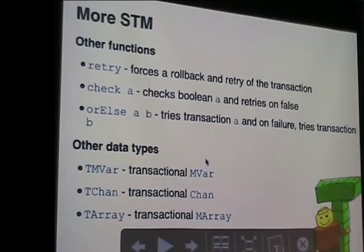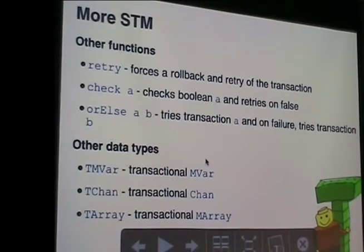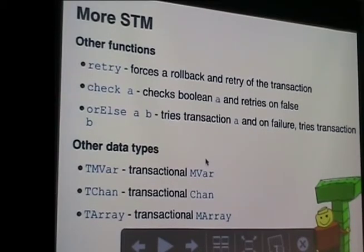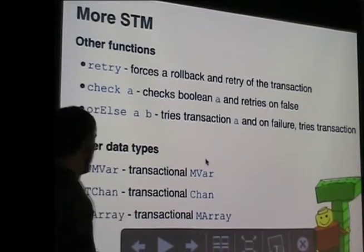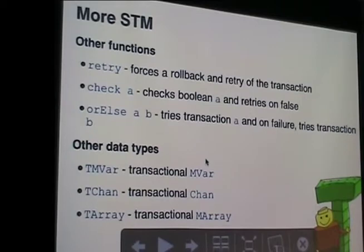We've got little helpers for STM: we can retry - if we think something's gone wrong we can tell it to retry the transaction. We can check, passing in a Bool, and if it's false it'll try again. Or else we can do one transaction or another transaction. That's just to show they're easily composable. We've got the same kind of channels and variables on top of those, and also a transactional array which is built from the mutable array.